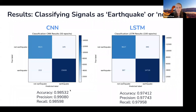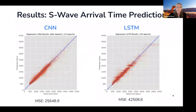For the results, here is a comparison of the confusion matrices for the CNN versus the LSTM. They both had good accuracy, precision, and recall, but the CNN was a little better with 98 to 99% accuracy, precision, and recall versus about 97% for the LSTM.